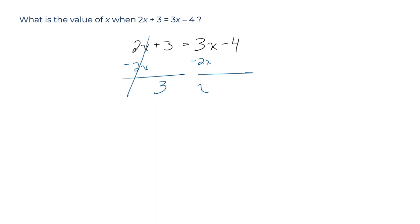but on the right-hand side, 3 minus 2, of course, is just 1. 1x minus 4, okay.